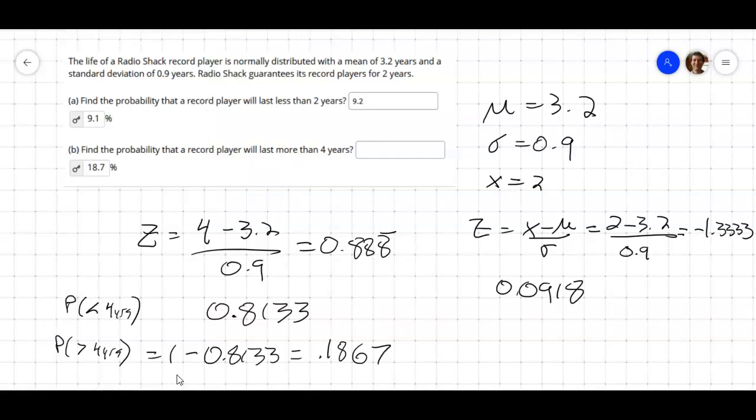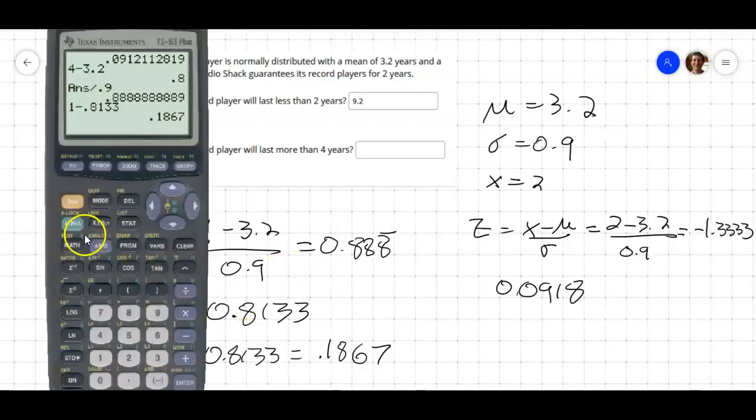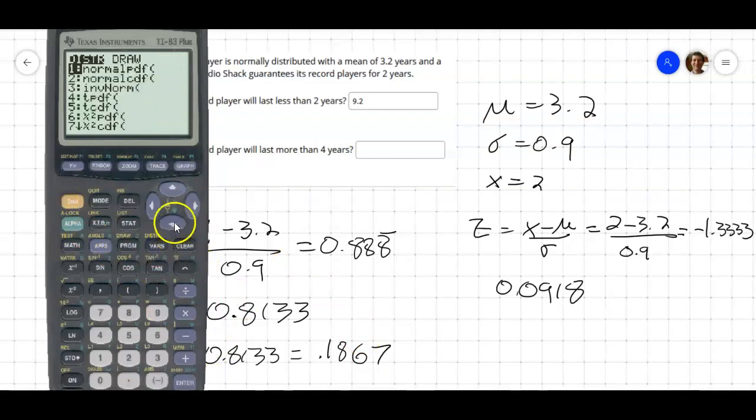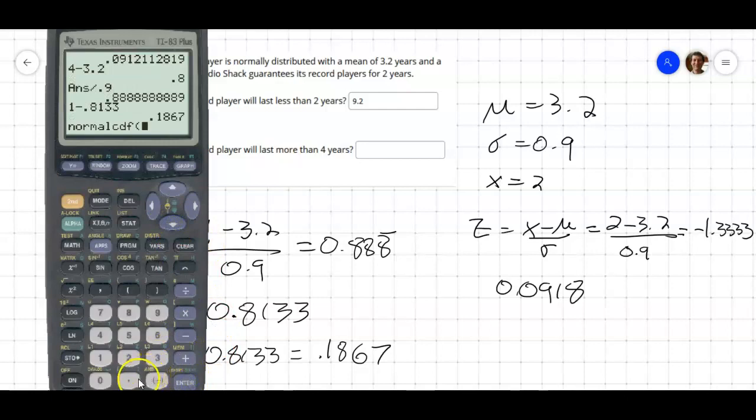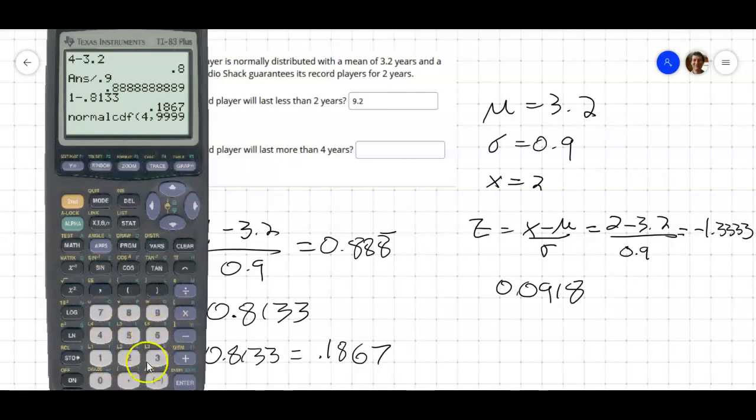So this would be 18.7%. That actually matches up with the exact answer as well. Let's take a look. If you have this kind of graphing calculator, we can again go into the distribution, cumulative CDF. This time we want to go from 4 to really far to the right. I just put like 4 or 5 nines, where the mean is 3.2 and the standard deviation is 0.9. 0.1870, so 18.7%. The z-score table gets us 18.67%. The actual answer is 18.7%. In this case, the z-score table rounds to the exact answer.